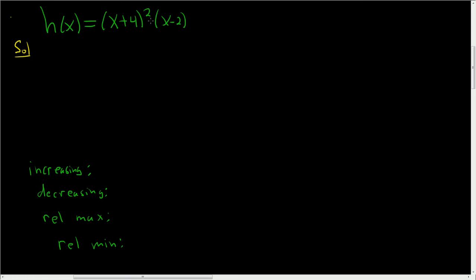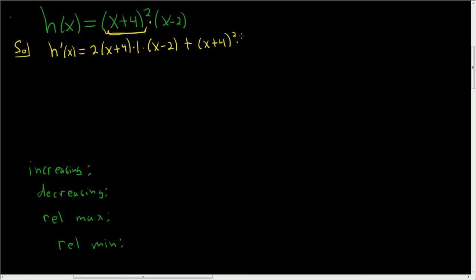We'll start by taking the derivative. When we take the derivative, we have to use the product rule. So h prime of x: the derivative of the first piece will be 2(x + 4), using the chain rule, times the derivative of the inside. That's the derivative of the first piece times the second piece, so (x − 2), plus the first piece, (x + 4) squared, times the derivative of the second piece, which is 1.